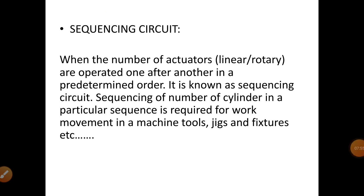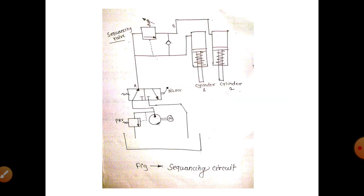Next is the sequencing circuit. In a sequencing circuit, when a number of linear actuators are operated one after another in a predetermined order, it is known as a sequencing circuit. Sequencing of a number of cylinders in a particular sequence is required for work movement in machine tools, jigs, and fixtures. In simple terms, multiple actuators are operated one after another in a predetermined order.